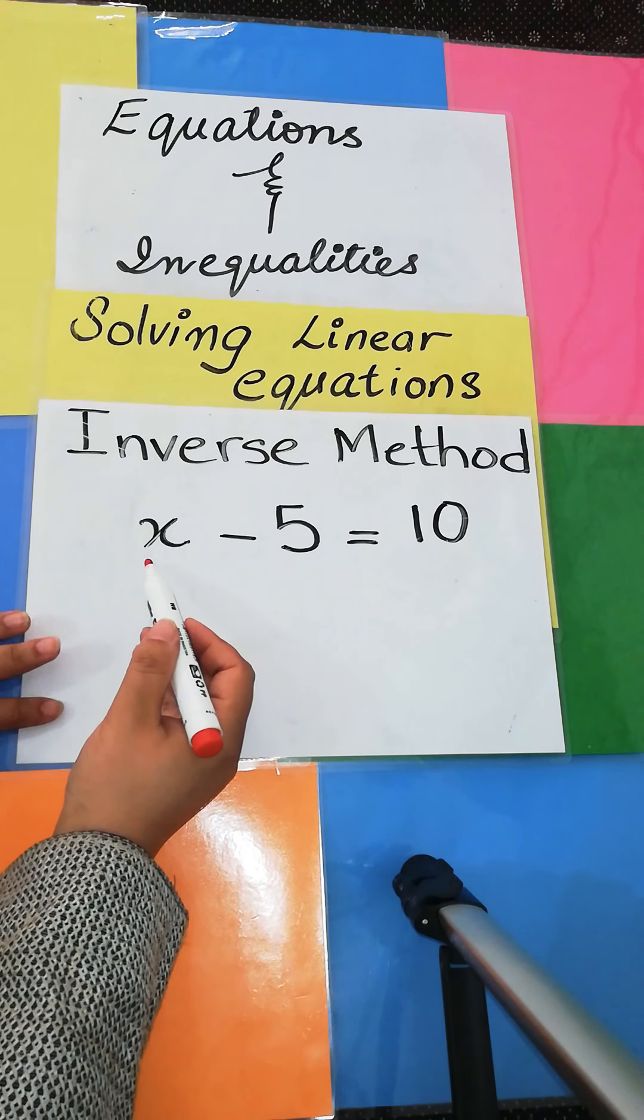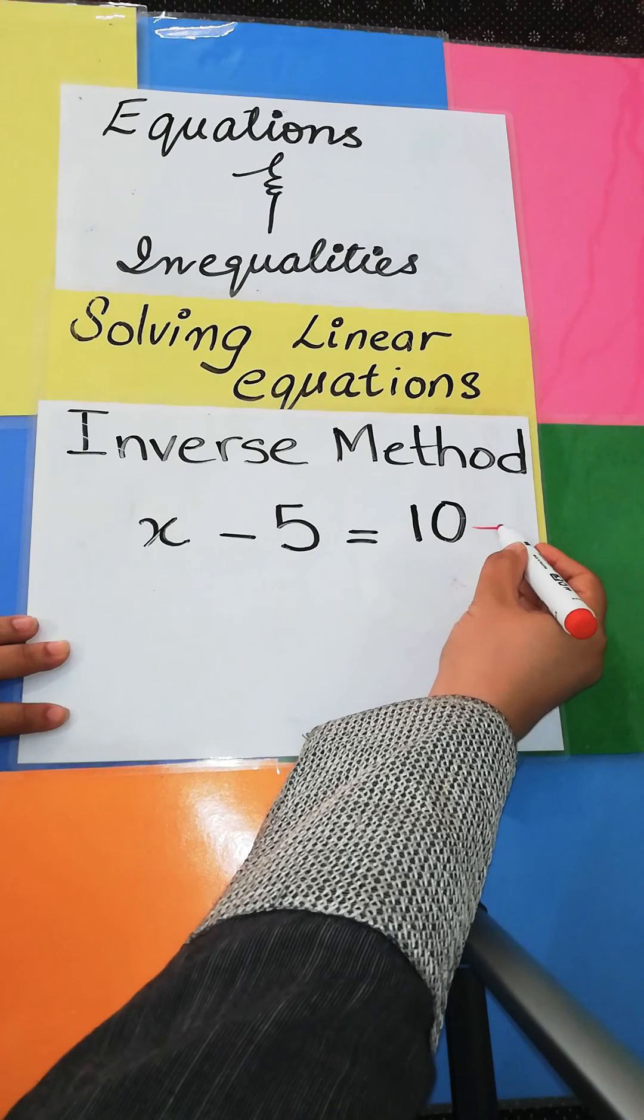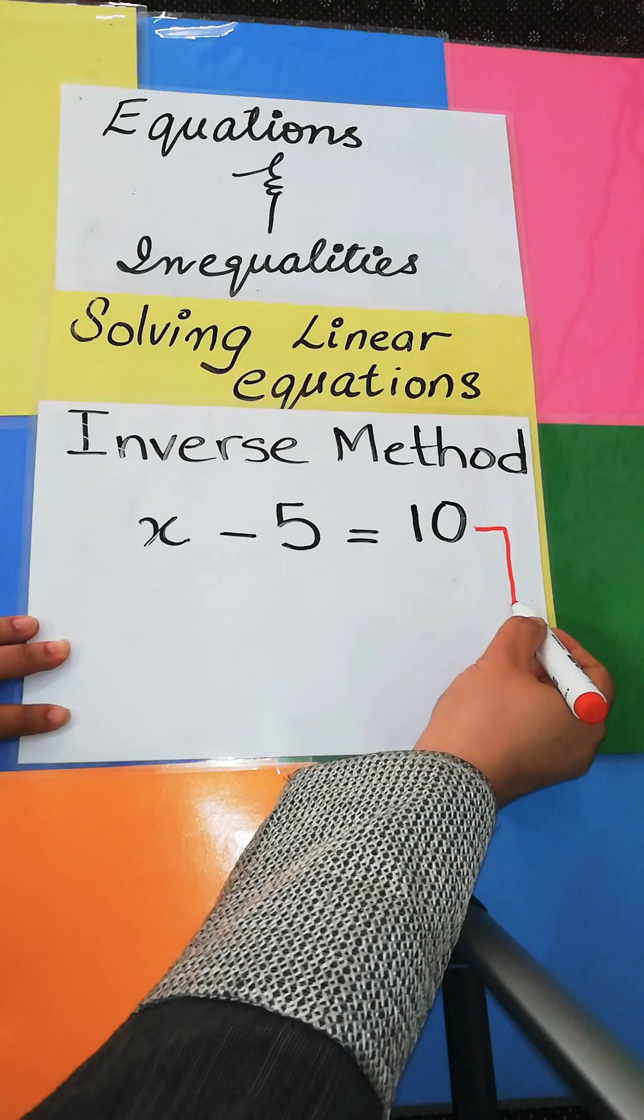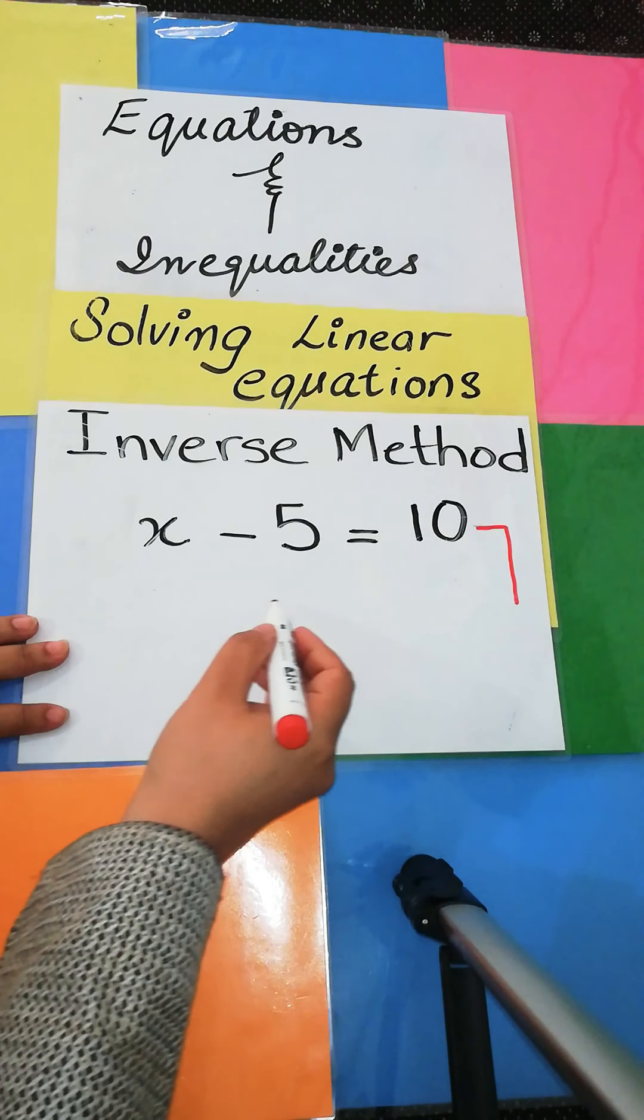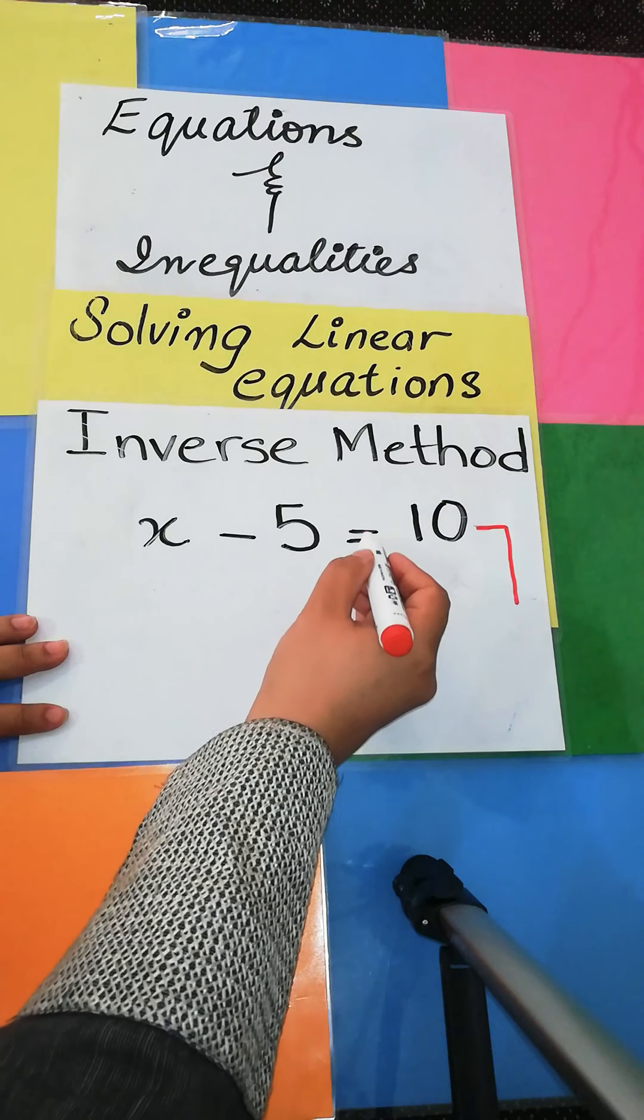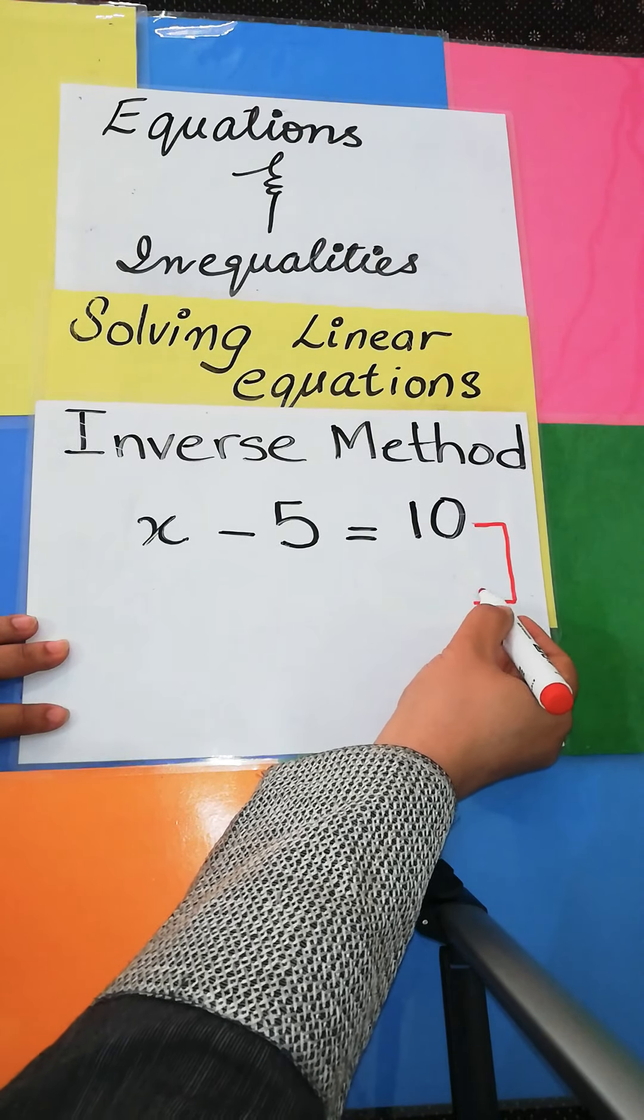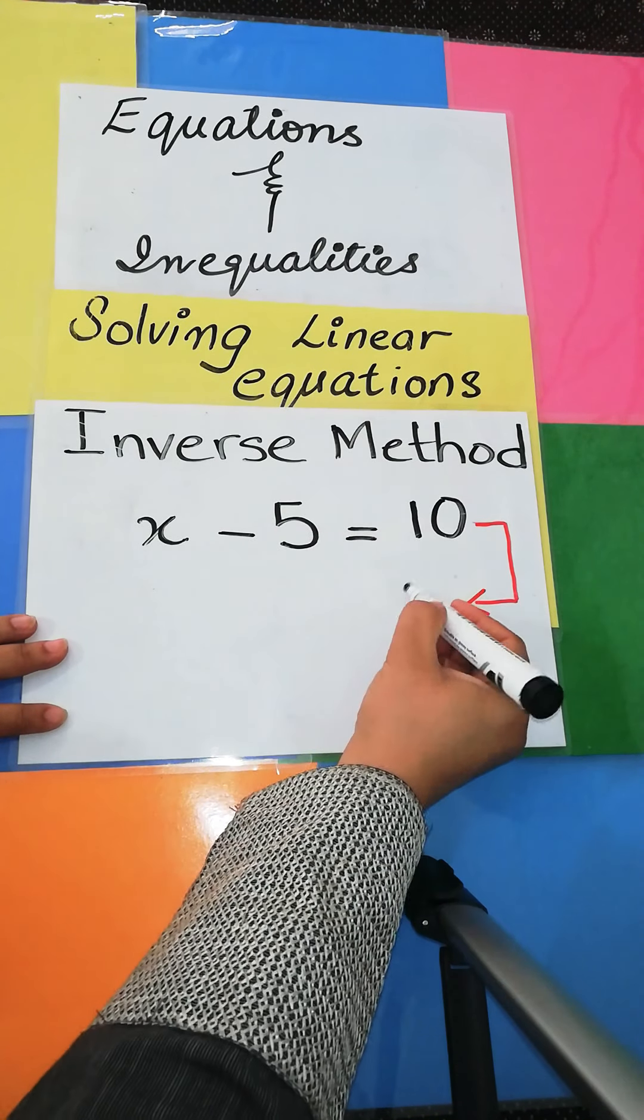So in inverse method, we are going to draw an arrow that shows the inverse procedure. Inverse means starting from the right-hand side and moving towards the left-hand side of the equals sign. So when I move my arrow like this in the inverse way,